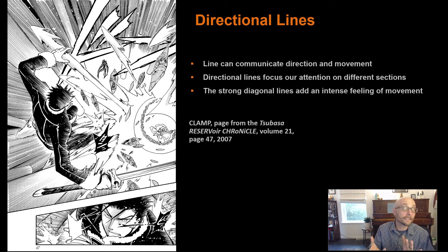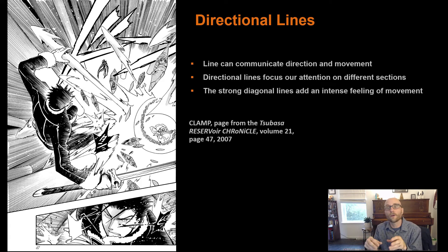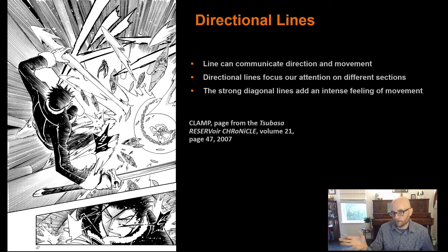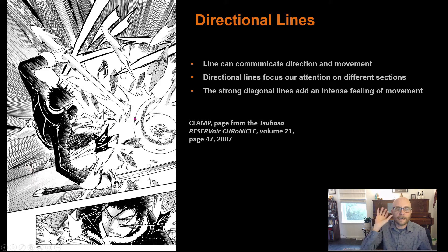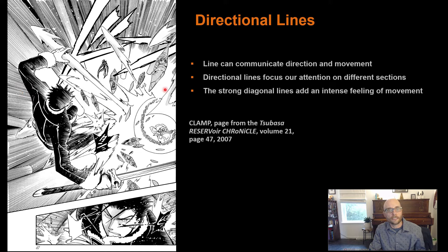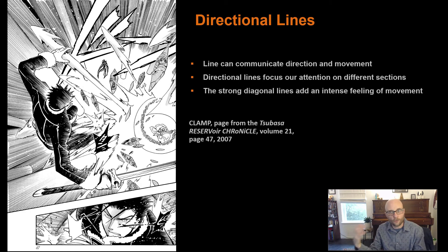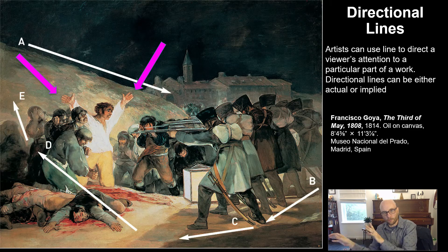Directional lines communicate direction and movement, and focus our attention on different sections. Strong diagonal lines can add an intense feeling of movement — for example, in this manga image. Manga is the Japanese word for comic. In this manga image, we get the idea that this character is plunging downwards through space because of these directional lines guiding our eye and showing us the direction of movement. You see this a lot in cartoons and comics to imply movement.